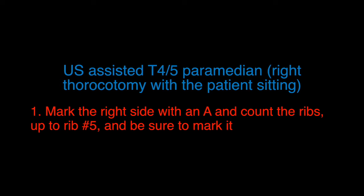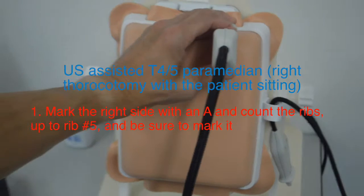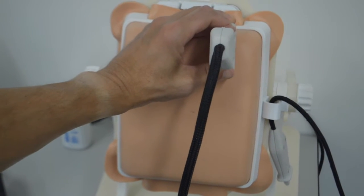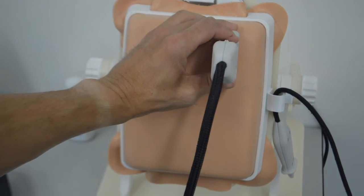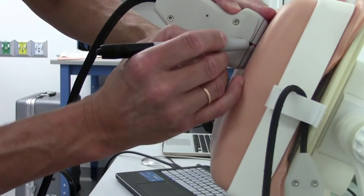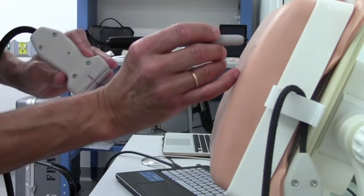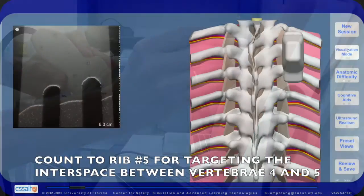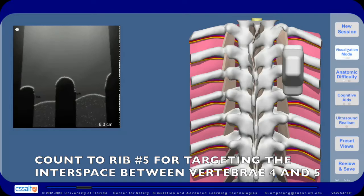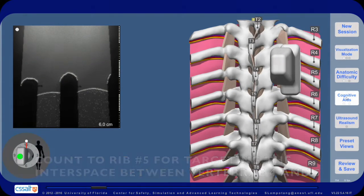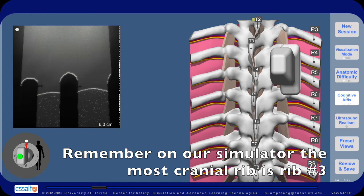Step 1: Mark the right side with an A and count the ribs up to rib number 5, and be sure to mark it. Count to rib number 5 for targeting the interspace between vertebrae 4 and 5. Remember, on our simulator the most cranial rib is rib number 3.